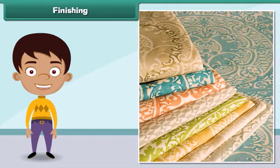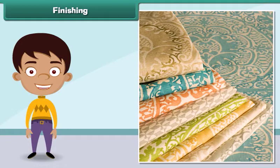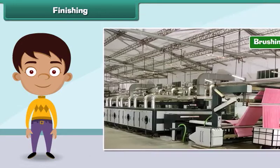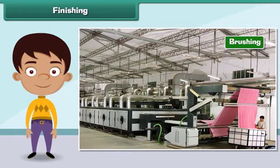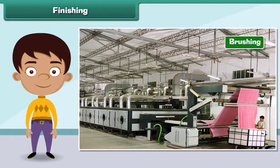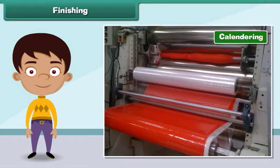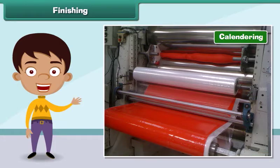The process that improves the appearance and usefulness of a fabric is known as finishing. Some important finishing treatments given to a fabric are brushing and calendaring. Brushing removes short and loose fibers from a fabric. Calendaring improves the smoothness and shine of a fabric.